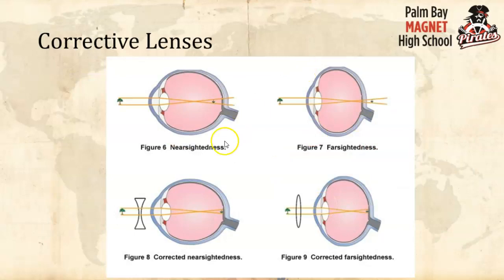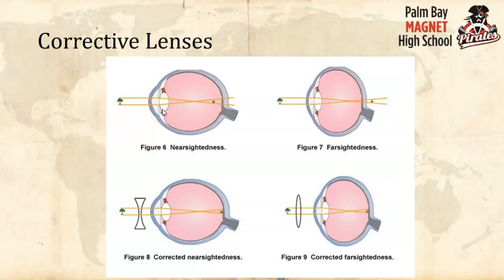If you're nearsighted like me, your eye lens has too much material — it's too powerful — so it brings the focal point forward of the cells at the back of your eye, making things blurry. We correct that with diverging lenses to push the image further back. Laser surgery cuts out material to reduce the lens size. Astigmatism means the eye is football-shaped rather than round, also causing blur.